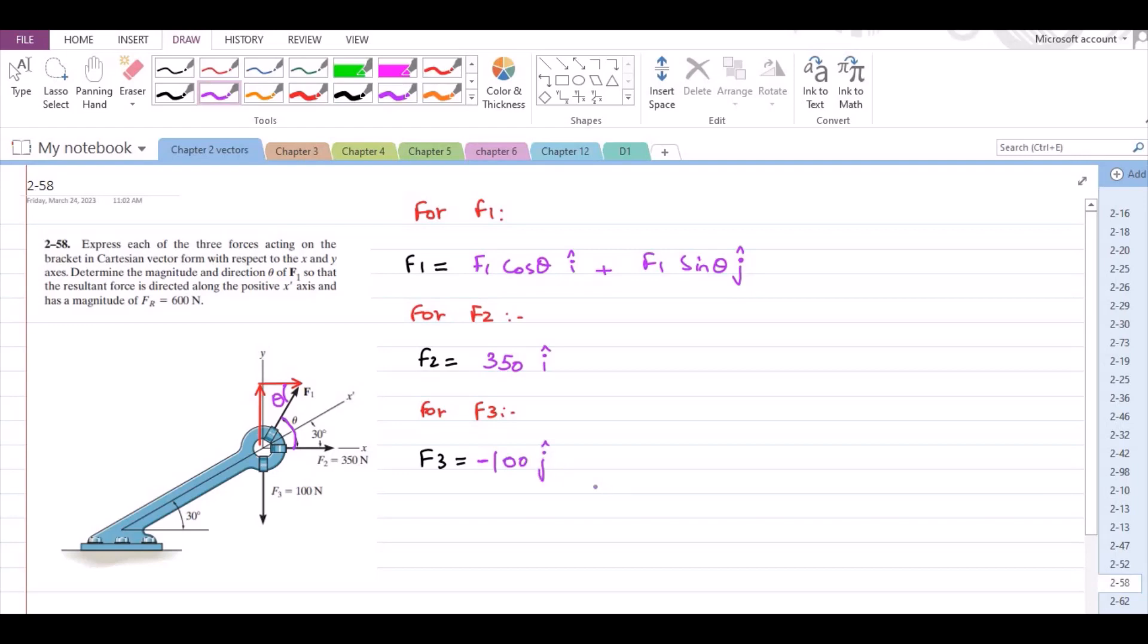Now we have expressed all the forces in terms of Cartesian vector form. Now we have to find the magnitude and direction theta of F1. So for that, let us mark the resultant force. Now the resultant is directed along the x dash axis like this. This is FR.